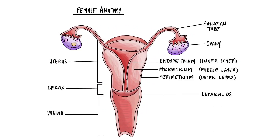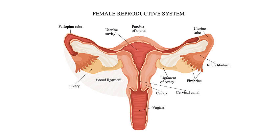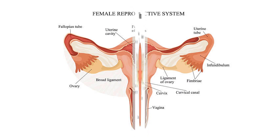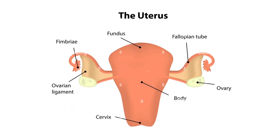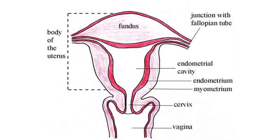Next, we move on to the uterus and cervix. The uterus is the muscular organ that nourishes and supports the growing embryo. The average size is approximately 5 cm wide by 7 cm long, and it has three sections. The portion of the uterus superior to the opening of the uterine tubes is called the fundus. The middle section is called the body of the uterus. The cervix is the narrow inferior portion of the uterus that projects into the vagina. The cervix produces mucous secretions that become thin and stringy under the influence of high plasma estrogen concentration, facilitating sperm movement through the reproductive tract.